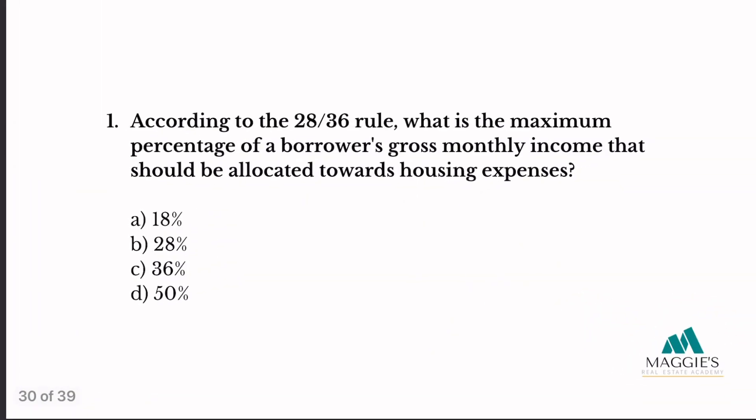Number one: according to the 28/36 rule, what is the maximum percentage of a borrower's gross monthly income that should be allocated towards housing expenses? Since the question mentions housing expenses, that automatically tells me I'm looking for 28%. So my answer is B.